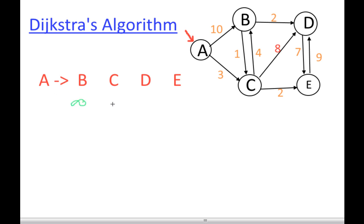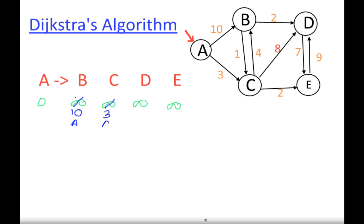We select A as the source node, and relax to all other vertices from A. The source is always 0 at the beginning. From A to B the weight becomes 10, so we write down 10 with parent A. From A to C the weight is 3, so infinity becomes 3. There are no more paths from A, so the others stay infinity.